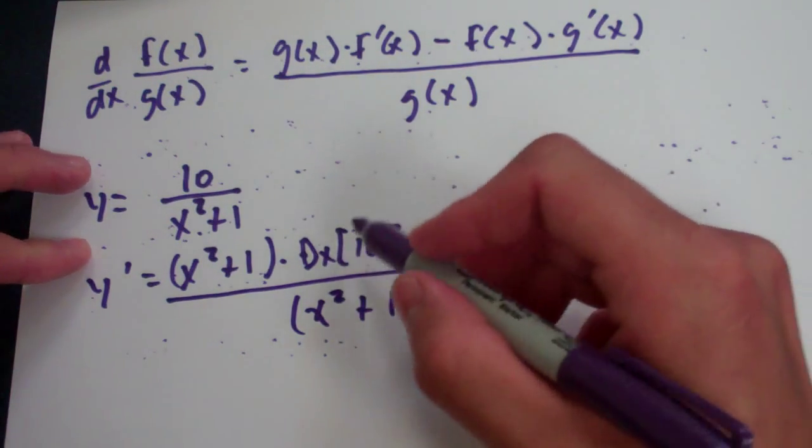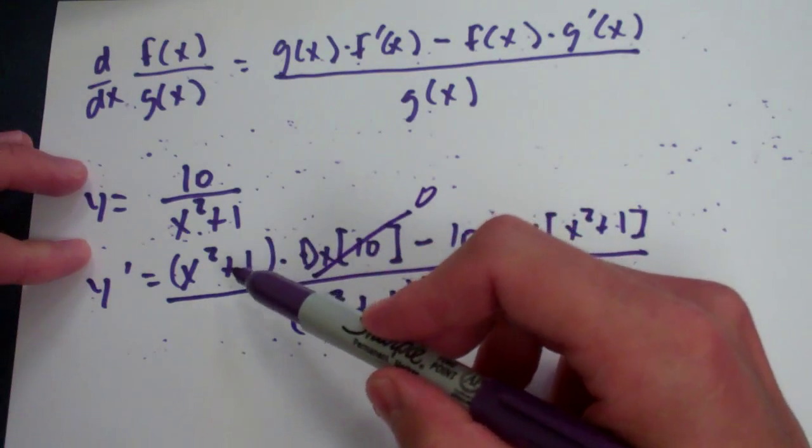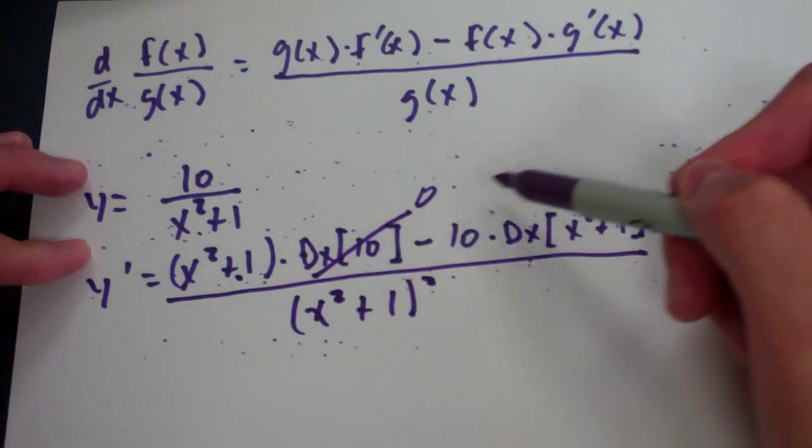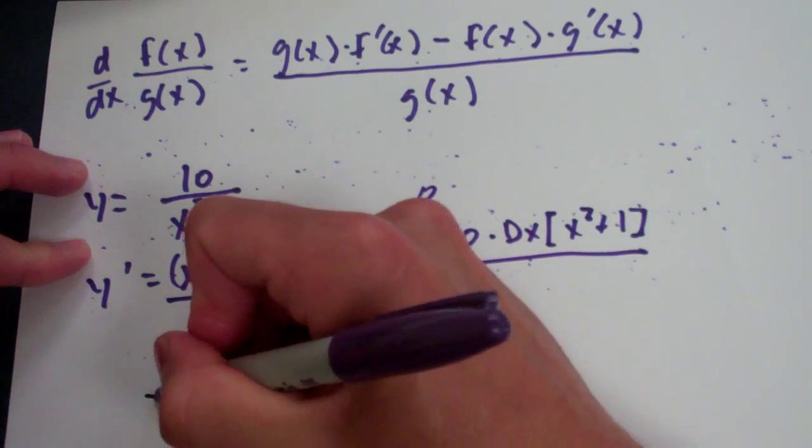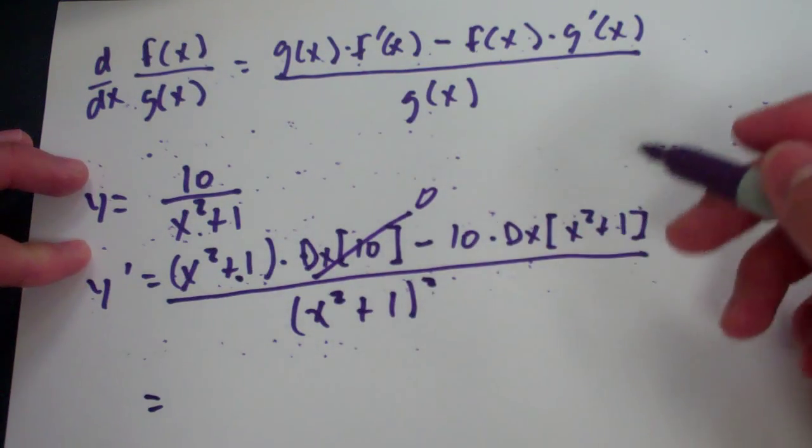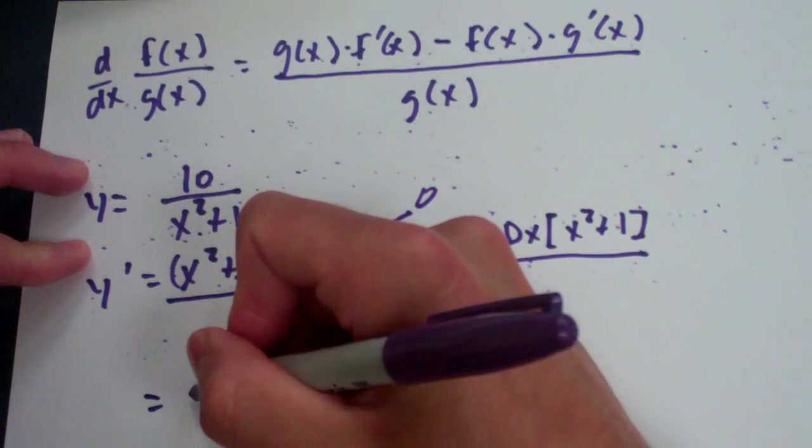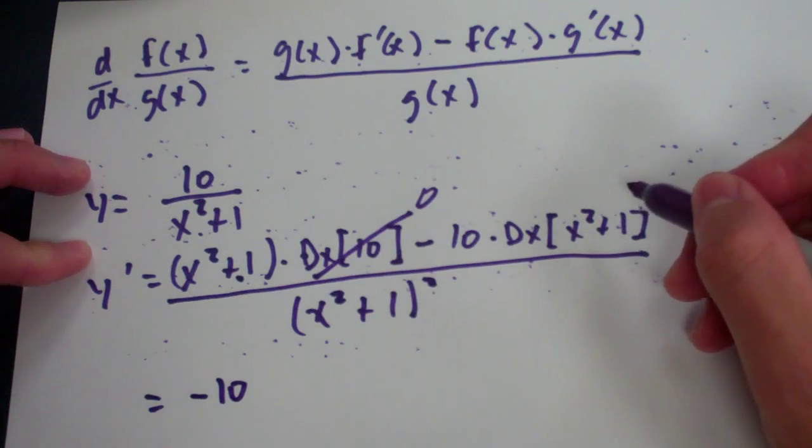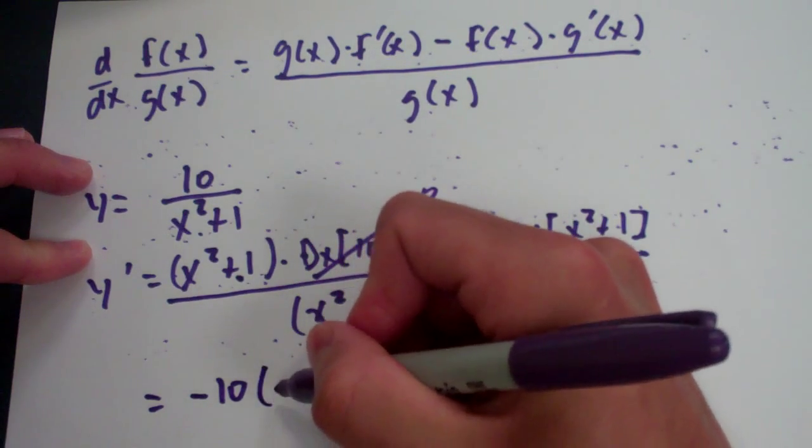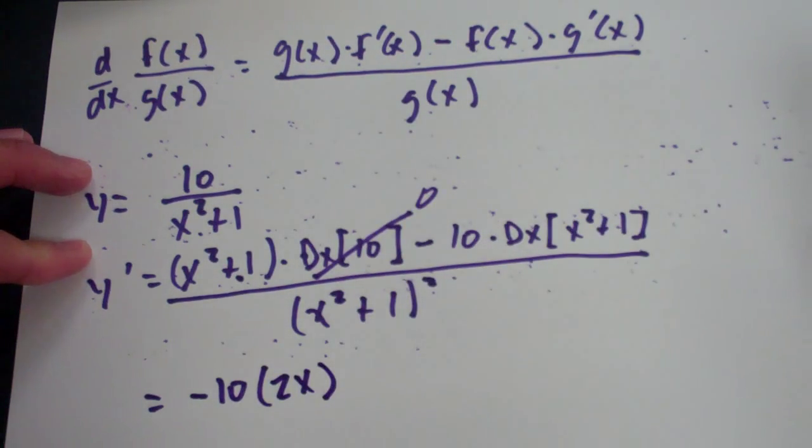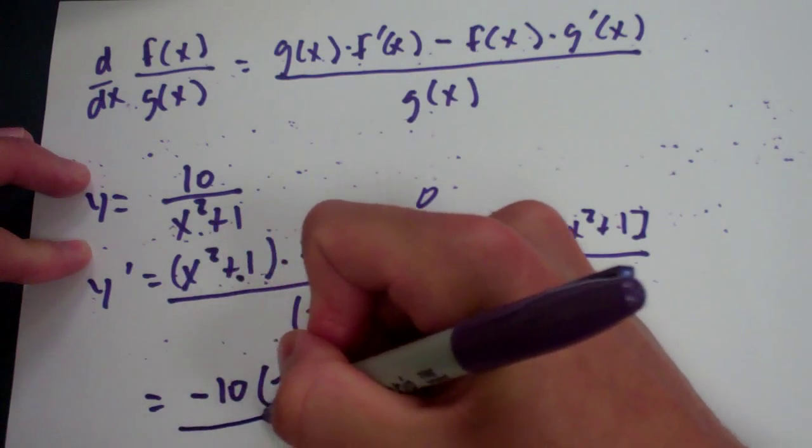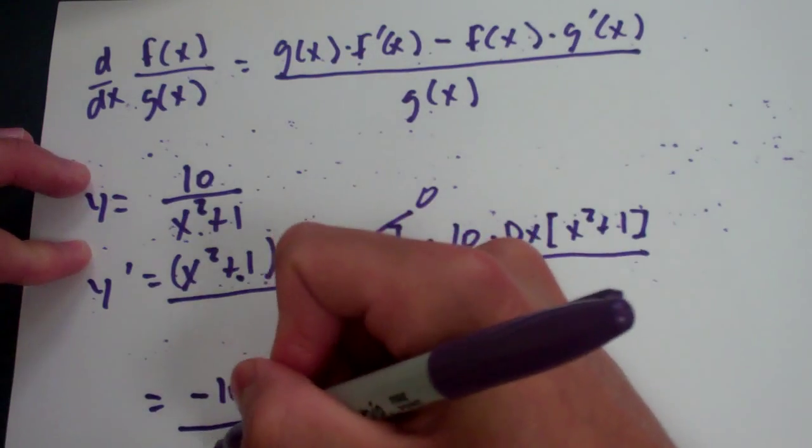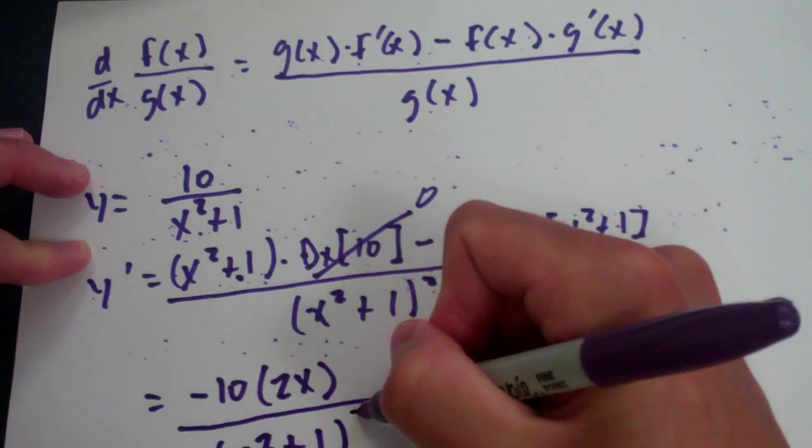As you know, the derivative of a constant is 0. So, anything times 0 is 0. So, now all we have to do is worry about this part of it, right? And what do we have? Negative 10 times the derivative of this. Well, I'm going to drop the 2 and subtract 1 from the exponent. So, we have times 2x all over x squared plus 1 squared.